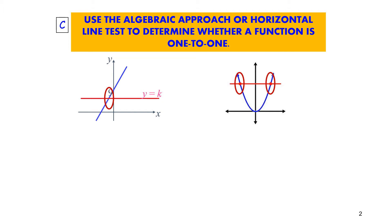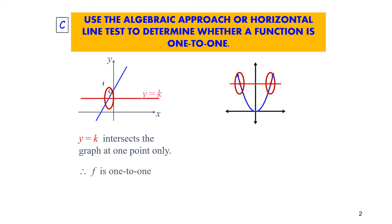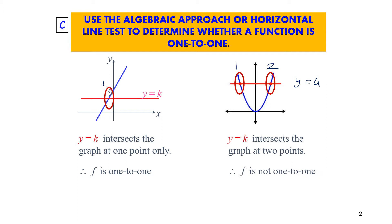Looking at this graph, on the left graph, the line y equals k intersects the graph at one point only. Therefore, in this case, f is one-to-one. On the right graph, the line y equals k intersects the graph at two points. So therefore, in this case, f is not one-to-one. In other words, in order to be one-to-one, the intersection must be at one point only. If more than one, the function is not one-to-one.